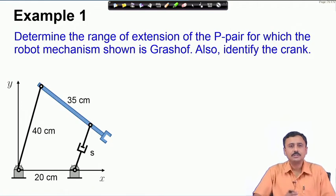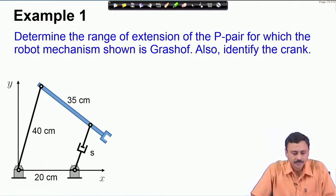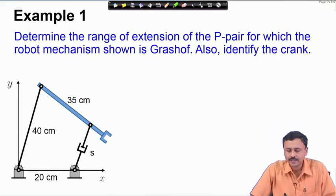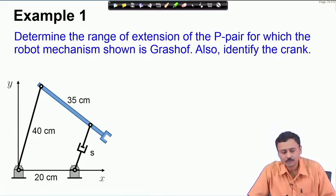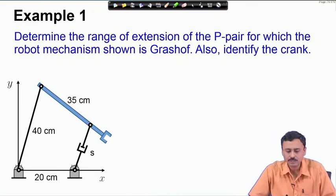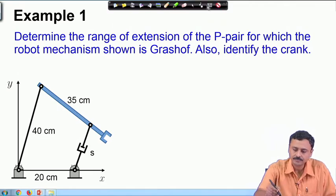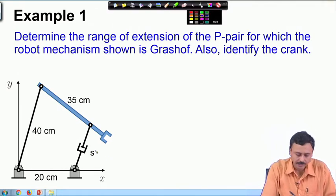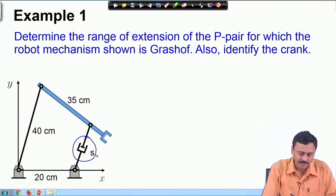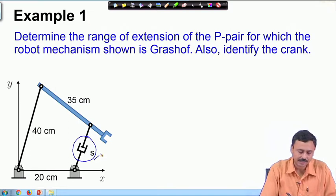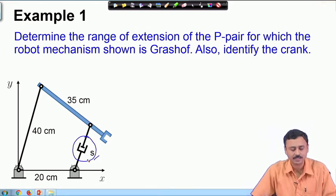We discussed the Grashof criterion for a 4R kinematic chain: if the sum of the shortest link plus the longest link is less than the sum of the other two links, then the shortest link is a crank and can rotate completely with respect to all other links. For a 3R1P chain, the Grashof criterion says that if the shortest link plus the offset is less than or equal to the other link, then the shortest link is a crank. Now let us come to the first problem.